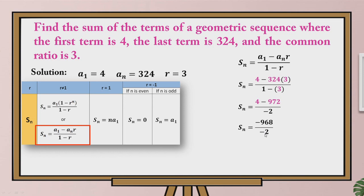By the rule of dividing integers, a negative number divided by a negative number gives a positive result. So negative 968 divided by negative 2 is equal to 484. The sum of this geometric sequence is equal to 484. Even though we didn't know how many terms we summed, knowing the first term, the last term, and the common ratio with this formula allows us to still find the sum.